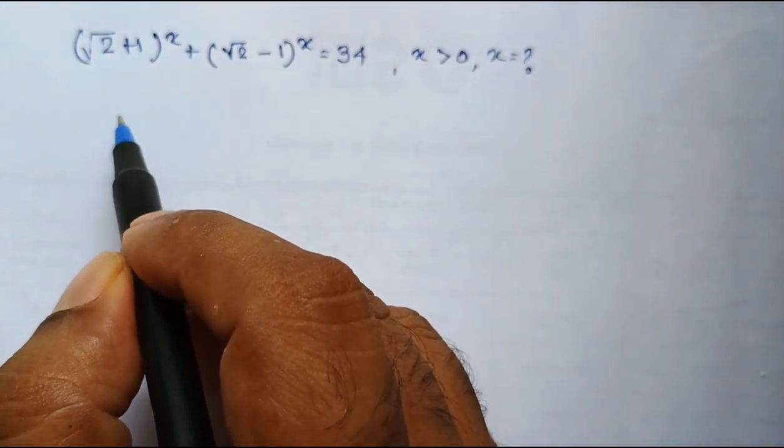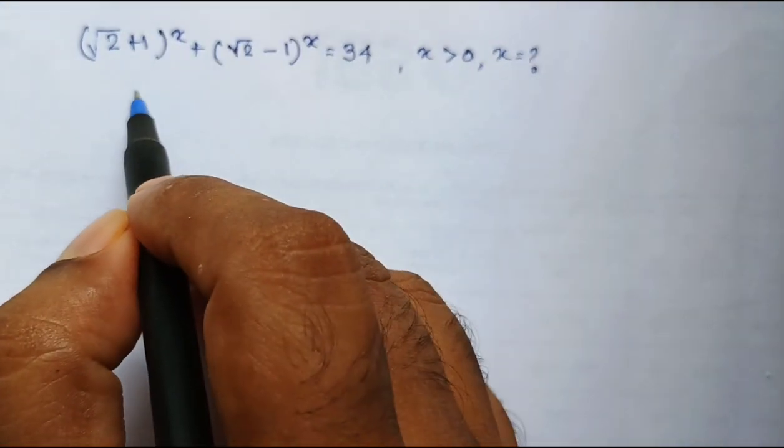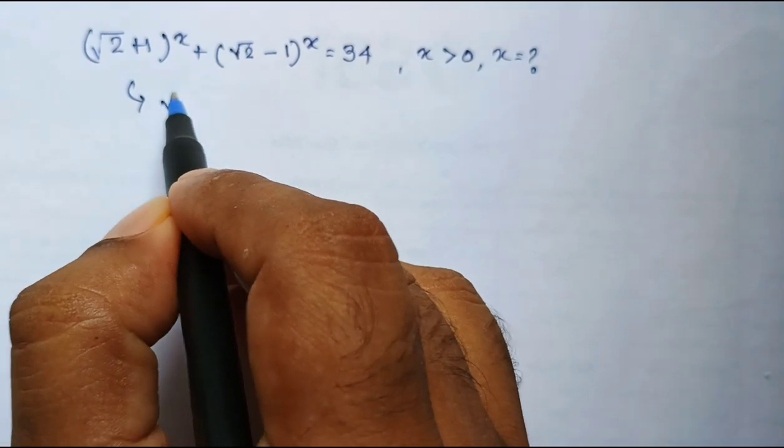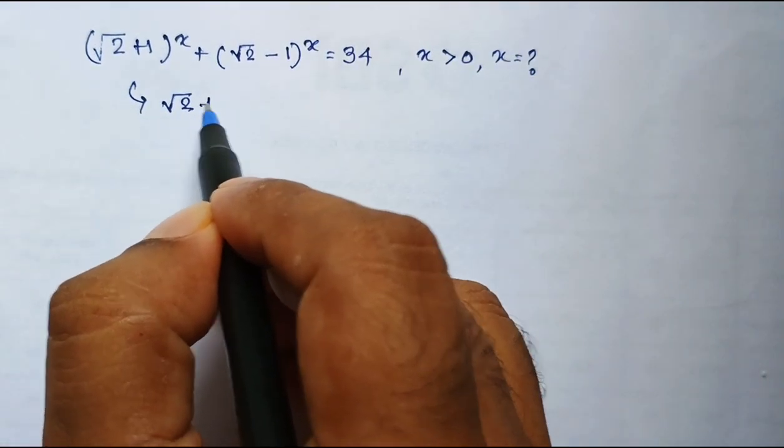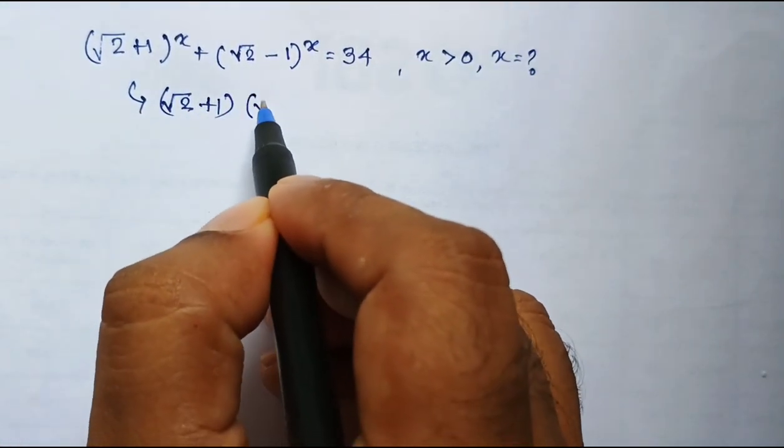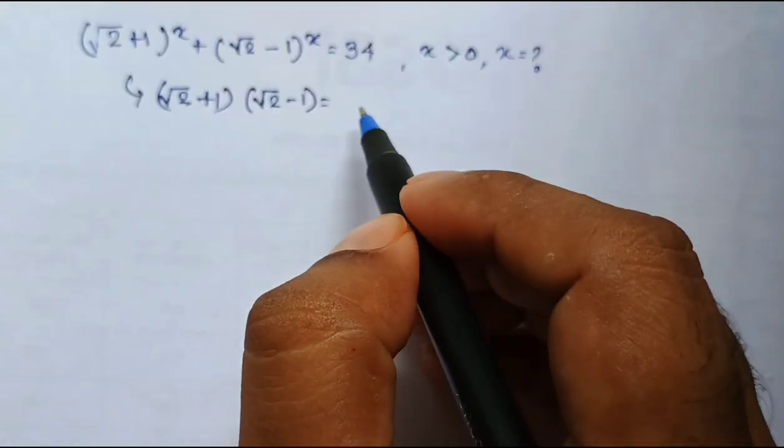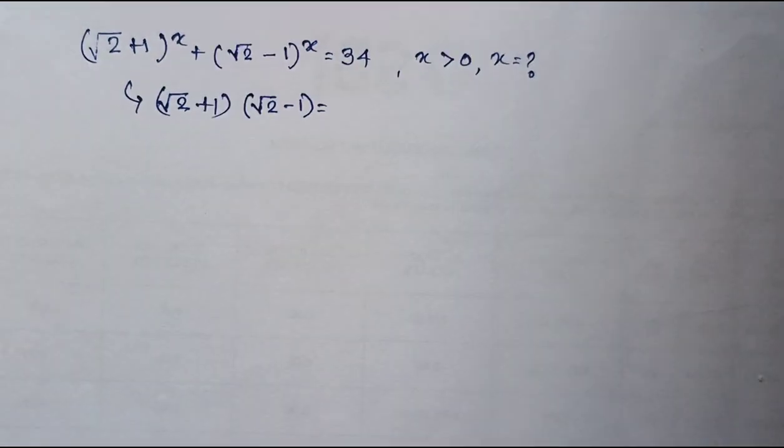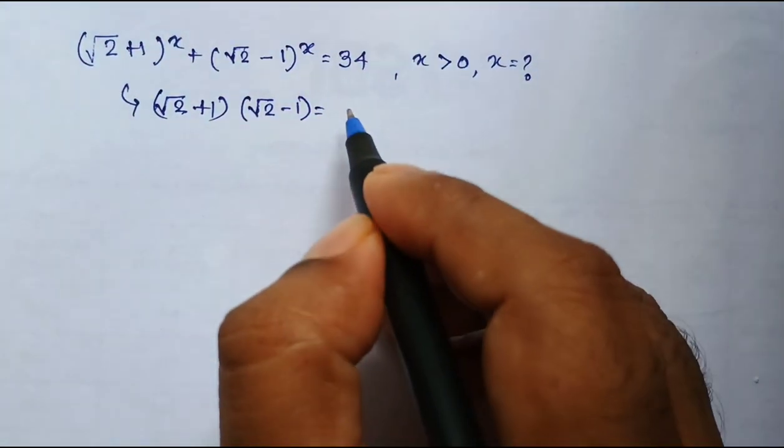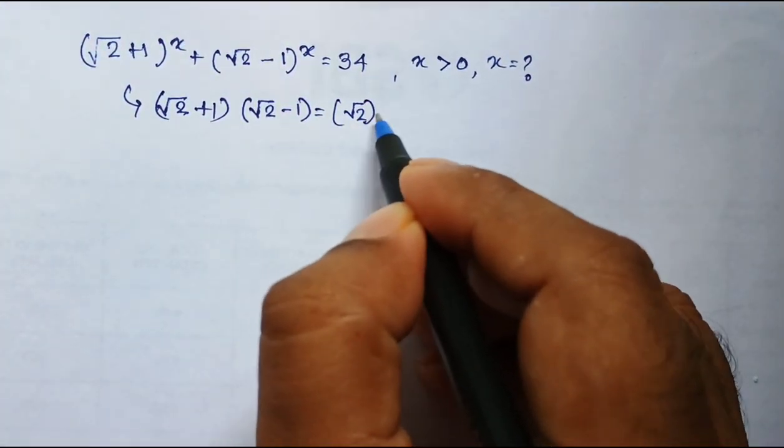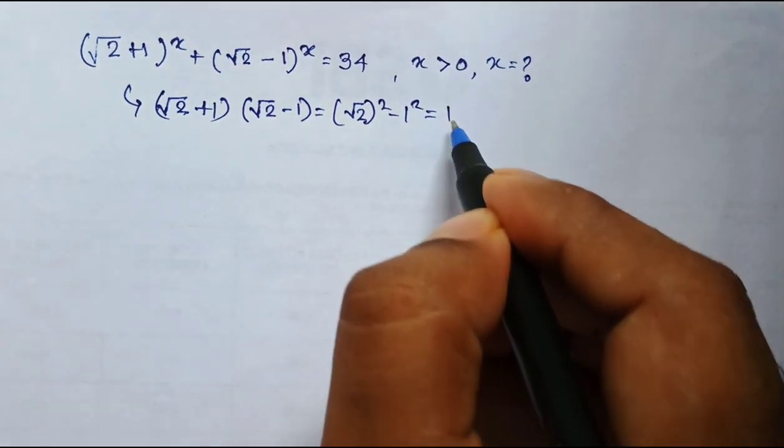The first thing that we should do to solve this problem is a trick that is square root of 2 plus 1 into square root of 2 minus 1. That is the formula of a plus b into a minus b, which is square root of 2 whole square minus 1 square, that is 1.